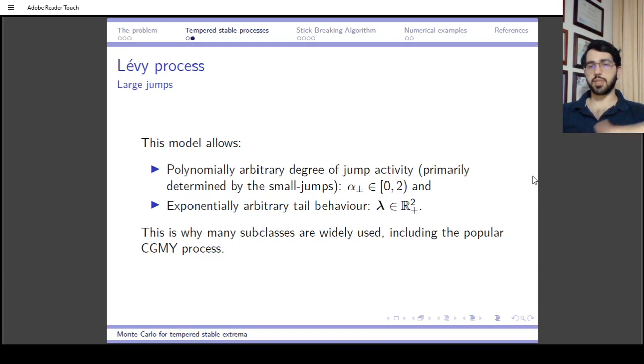This model is very popular because it allows for arbitrary polynomial behavior at zero, and we can control the thinness of the tails—how many exponential moments we want, which translates to how many moments the asset process will have.